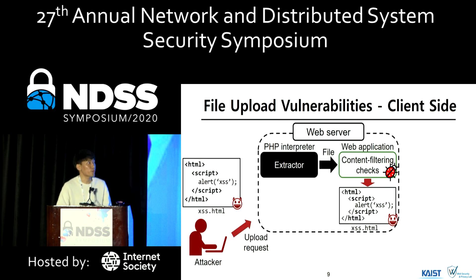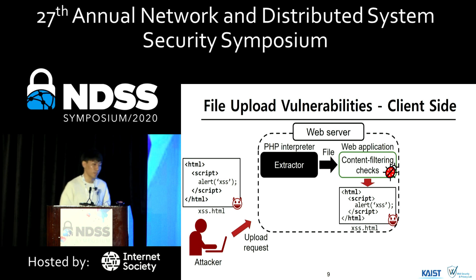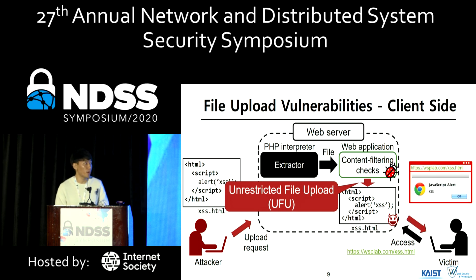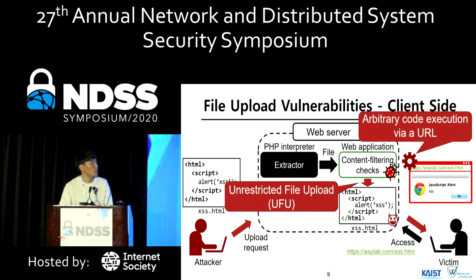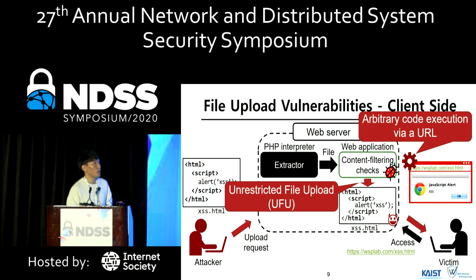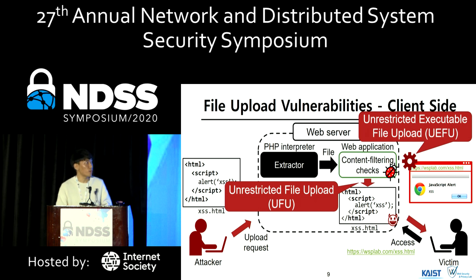This vulnerability can also occur at the client side. If the attacker uploads an HTML file with malicious JavaScript code, then the victim client can access this file via its URL, and the victim's browser will execute this script. This means the attacker is able to trigger arbitrary JavaScript code with the vulnerable web server origin on behalf of a victim. In summary, the consequences of UEFU vulnerabilities are triggering remote code execution in both the web server and the web browser.